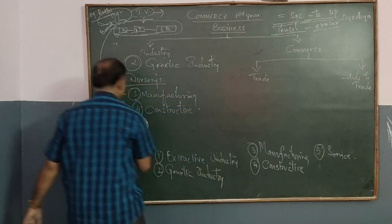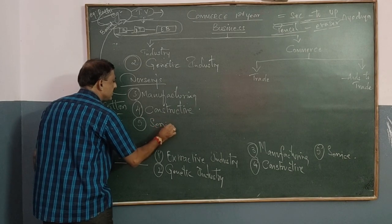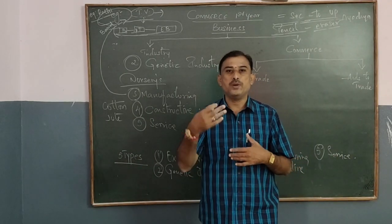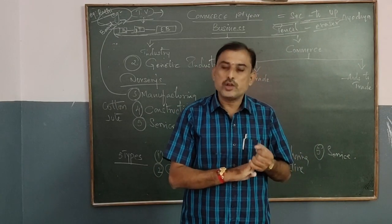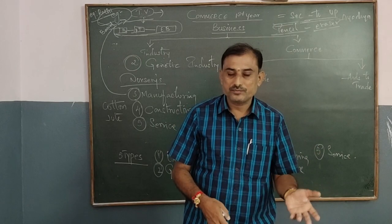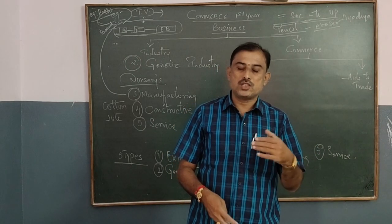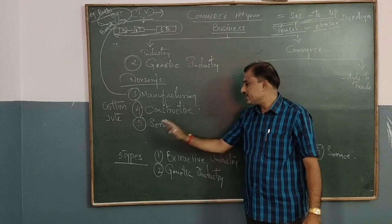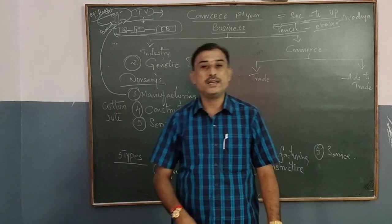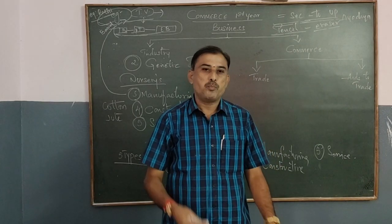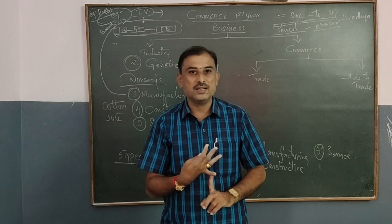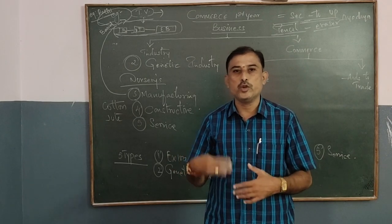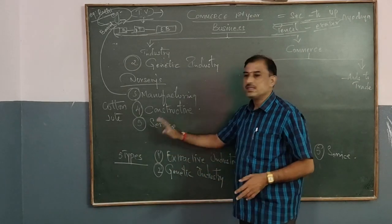The fifth and last type is service industry. Service industry means it is an industry which is going to provide services to the people in the form of utility services. In developed countries like America, 70-90% of the national income is generated from service industry. Service industry is a major industry in developed countries. Examples include providing transportation, banking services, hospitality services, courier services, and utility services — all of these are taken as a part of service industry.